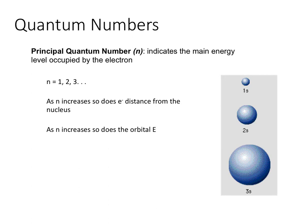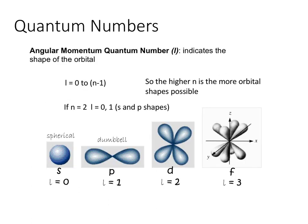The angular momentum quantum number, represented by L, indicates the shape of the orbital the electron resides in. S orbitals are spherical, with L=0. P orbitals are dumbbell-shaped, L=1. D orbitals have a clover shape with L=2, and F orbitals are more complex with L=3.